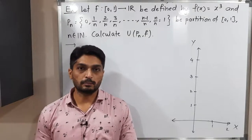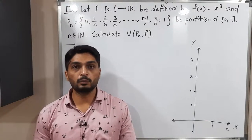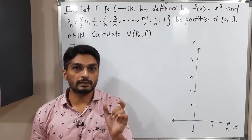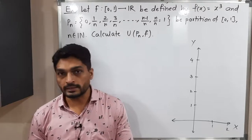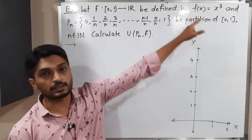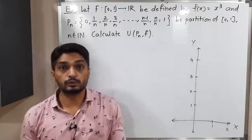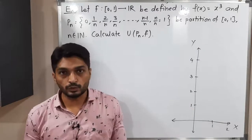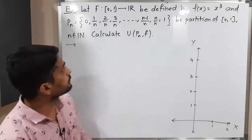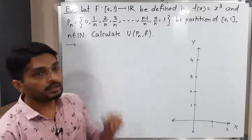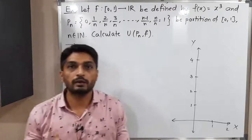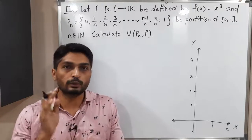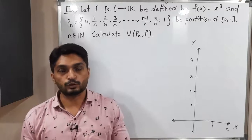Let us discuss this example. We have a function f defined on the closed interval [0,1], where f(x) = x³. A partition is given to us. We have to find U(P_n) — the upper sum — and we are also going to find the upper integral.